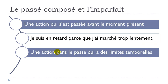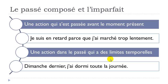Another use is une action dans le passé qui a des limites temporelles — an action in the past with clear time limits, either when it started or when it ended. The example: dimanche dernier, j'ai dormi toute la journée. Dormir means to sleep. Toute la journée means all day long — so you have a clear limit.